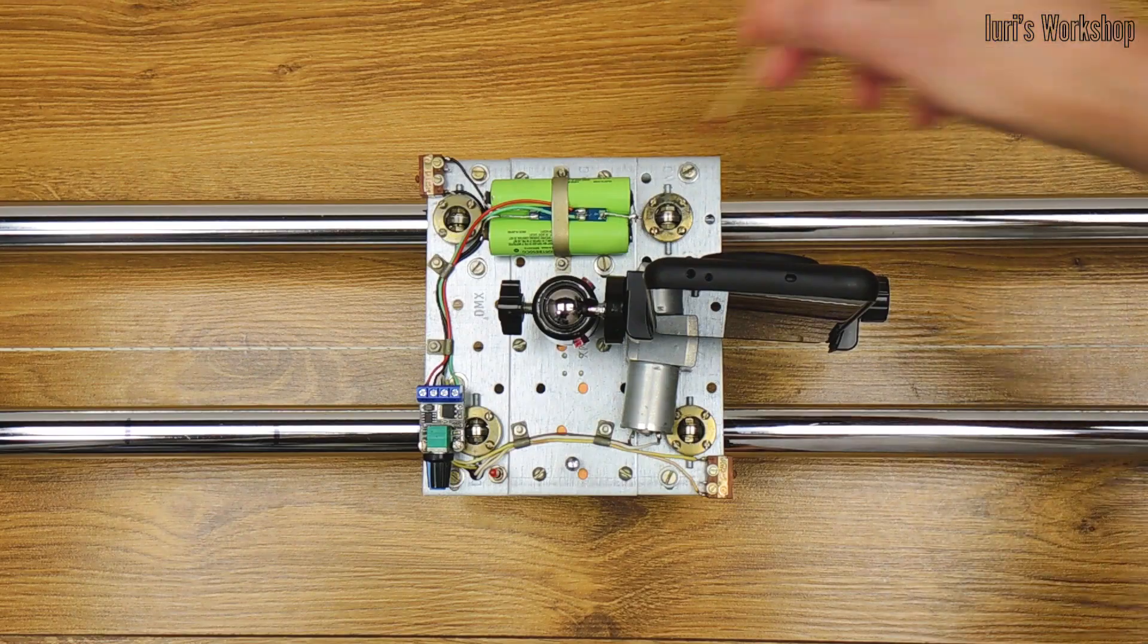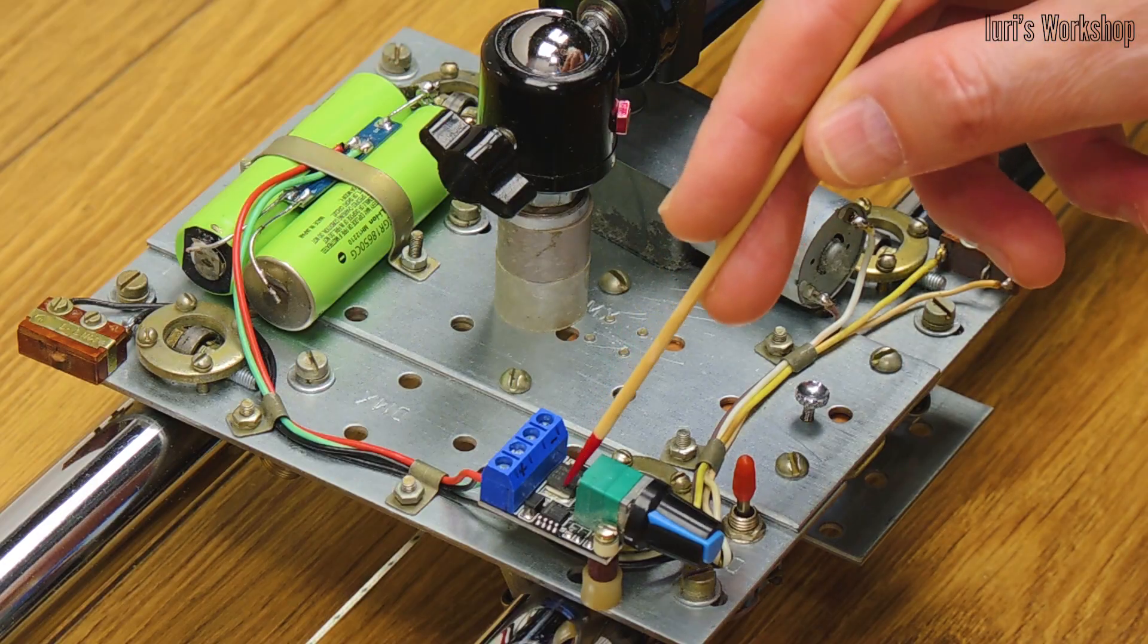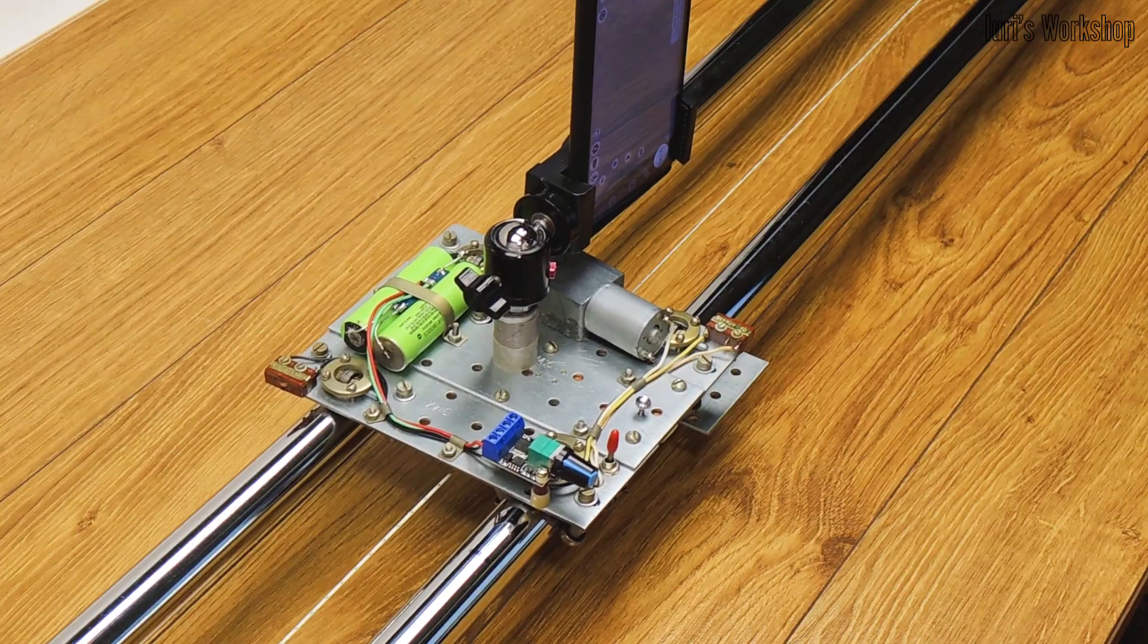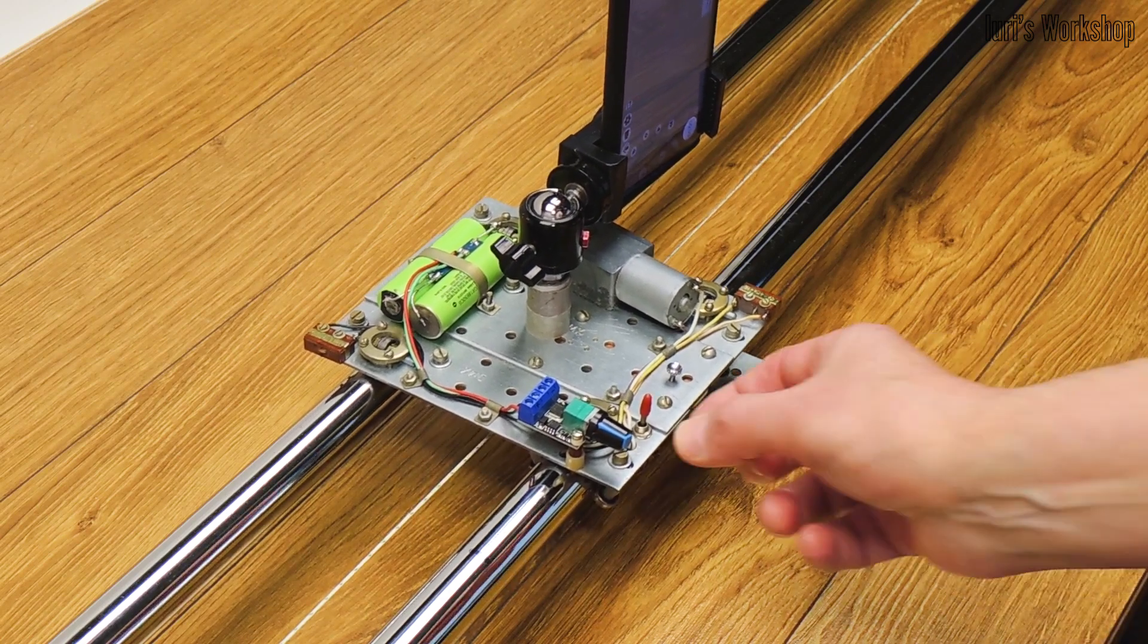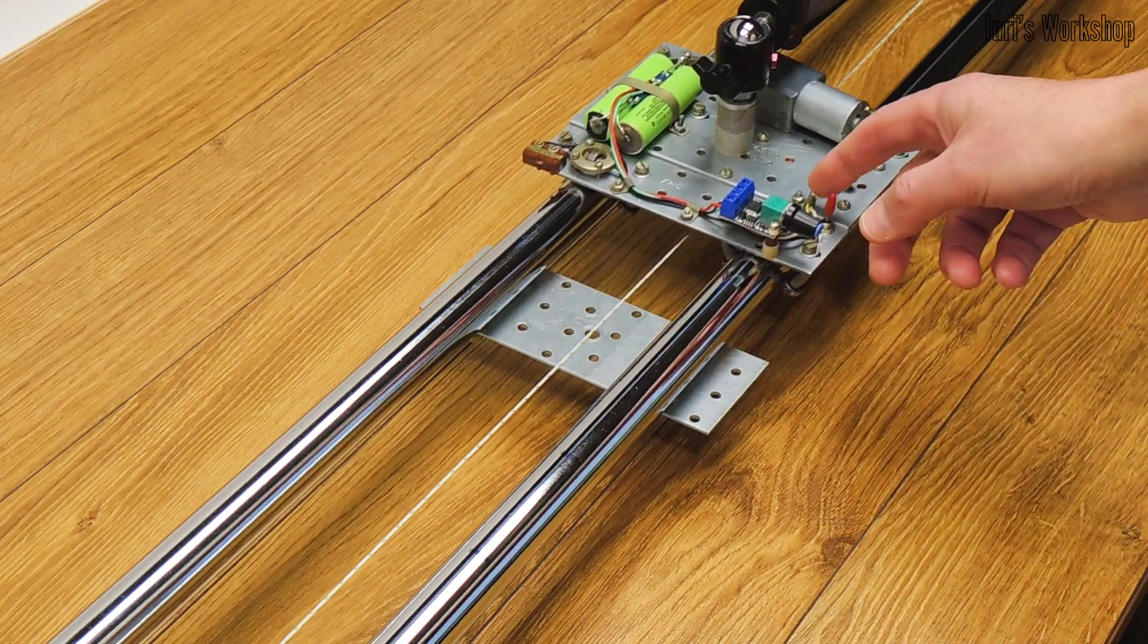In other cases, as for example in this slider, it was necessary to use a stabilized voltage converter in addition to the protection board in order to be able to control the speed of the camera. The wiring diagram is attached.